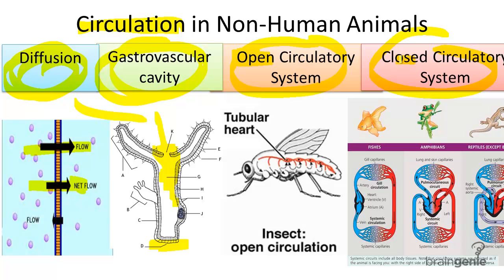In an open circulatory system, for example, such as the arthropods — like the grasshopper or a fly — these organisms may have blood that does not flow in defined blood vessels. Instead, their organs are continually surrounded by something called hemolymph. Hemolymph is analogous to fluids and cells that flow through the body in the form of blood in higher order mammals.